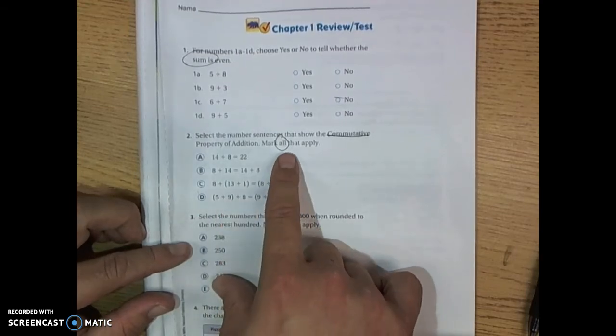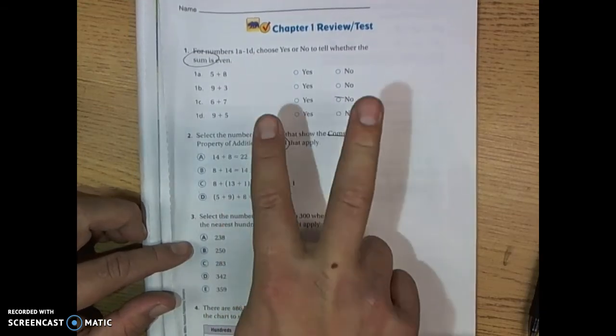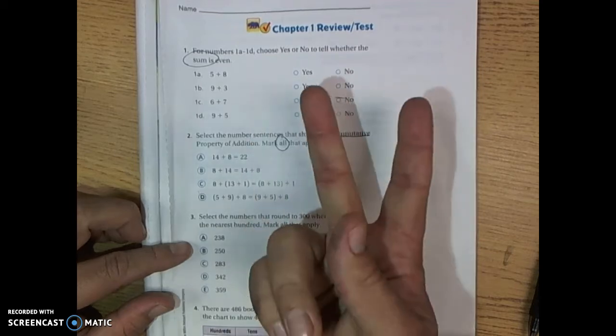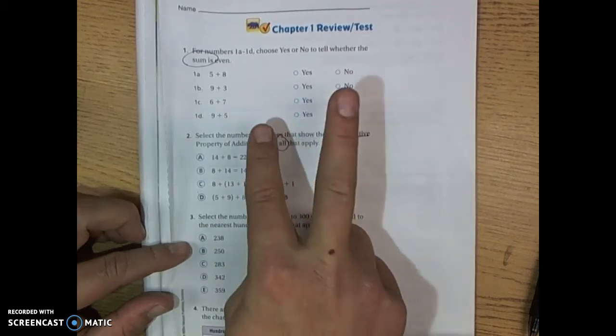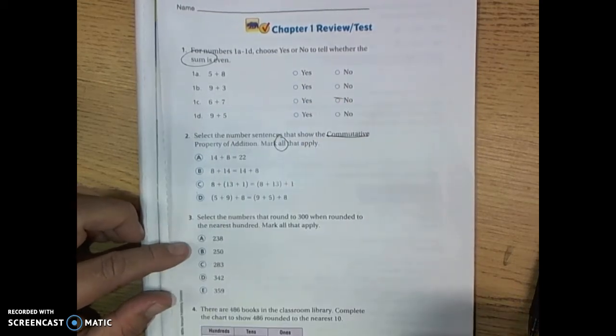So make sure that you look carefully but definitely mark all that apply where you see the commutative property, where the numbers are switching and the answer is still the same.